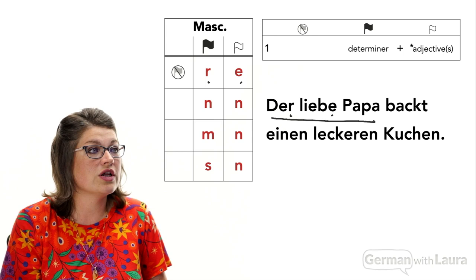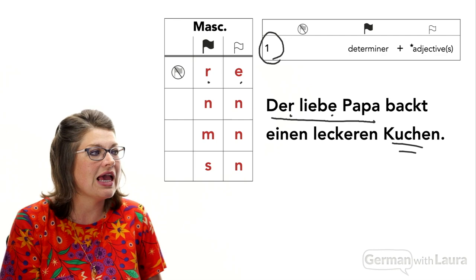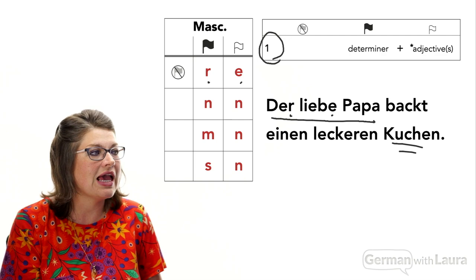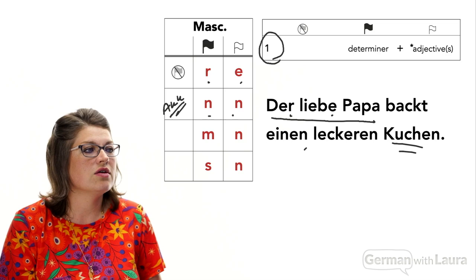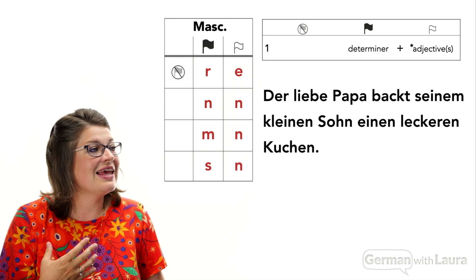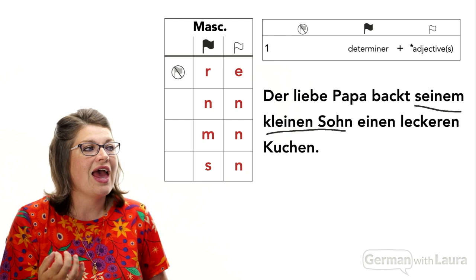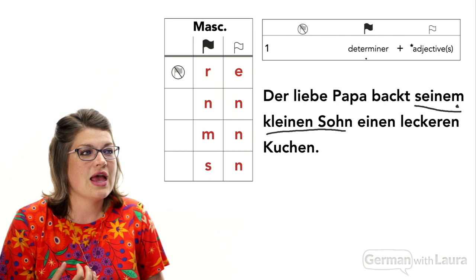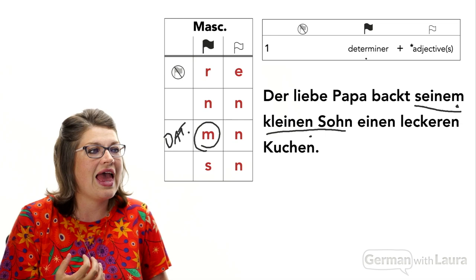Now if we expand the sentence and add in that yummy cake, we still have the subject noun — and we can see that it's the subject noun precisely because of the declension combo being used: that R and E according to our standard declension pattern. For our cake, which is the direct object and always goes into the accusative case, we can see that double N — both the determiner 'a' and the adjective 'yummy' are taking the N declension. And in the full sentence with the indirect object, his little son, the determiner takes the strong M declension from the dative case, and the adjective takes the weak N declension from the dative case.